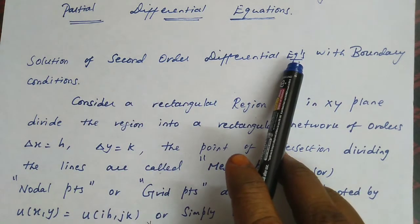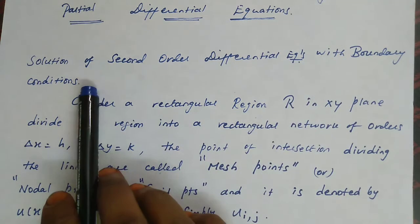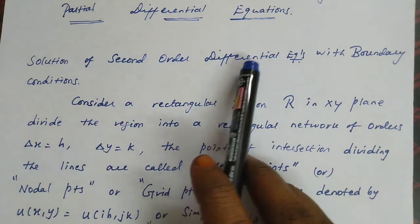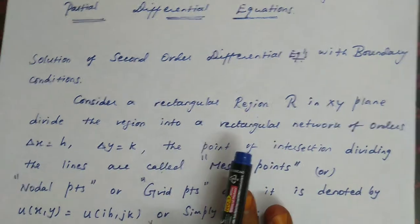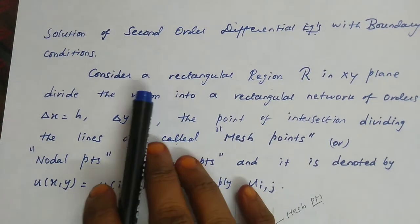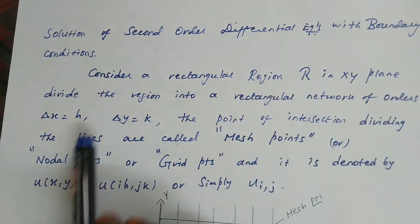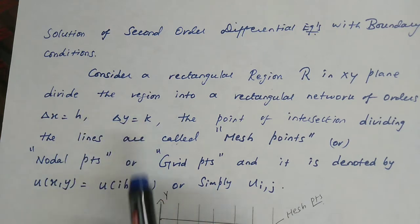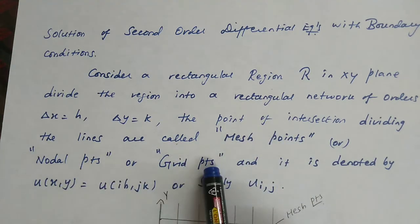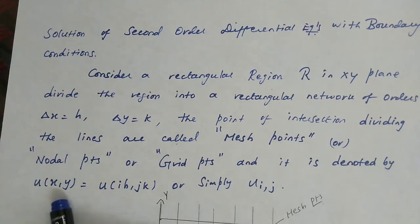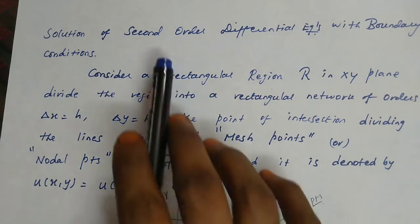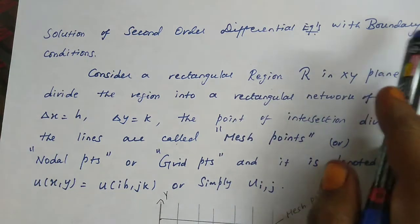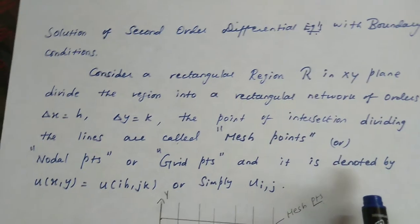Second Order Differential Equations will be given like the Laplace Equation and Poisson's Equations with Boundary Conditions. To get the solution, we are going to use some basic results. The first one is: consider a rectangular region R in the XY plane. Divide the region into a rectangular network of orders del X equal to H, del Y equal to K. The points of intersection of the dividing lines are called mesh points, nodal points, or grid points, denoted by U(X, Y) = U(iH, jK), or simply U(i, j).